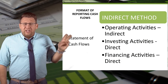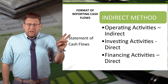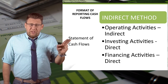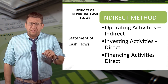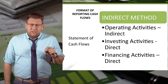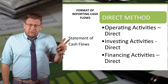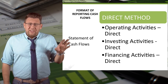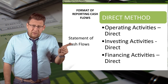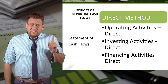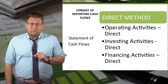Here you can see the indirect method. The operating activities section is reported with the indirect method, but investing and financing are completed with the direct method. This is an example of the direct method — here you can see that operating activities are reported using the direct method, as well as investing and financing, which are also completed with the direct method.